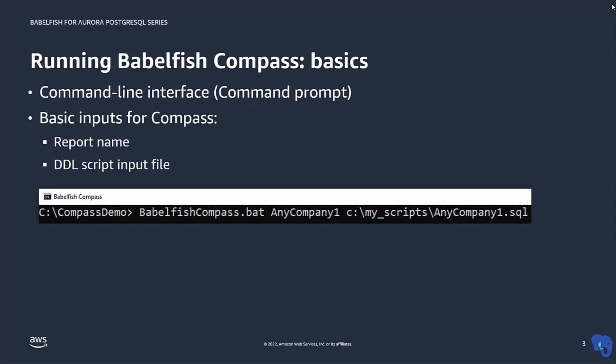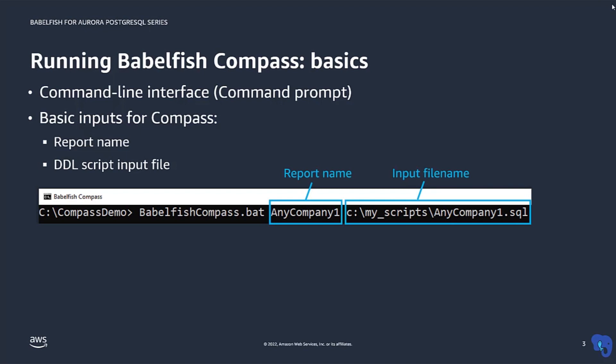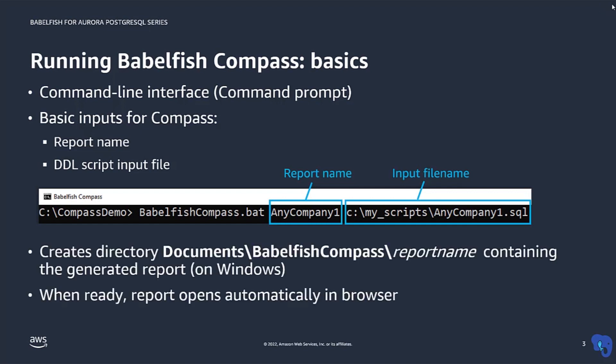In this series of Babelfish videos, there is an earlier video with an introduction to the Compass tool. That video shows the basics of how to run Compass. It is executed from the command line and you have to specify a report name and the input file name that contains the DDL code to be analyzed. Compass will then generate a report and automatically opens the report in your browser.